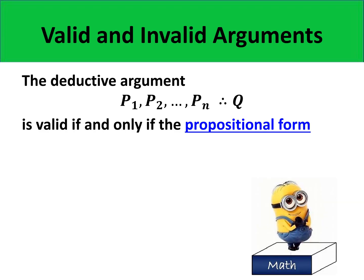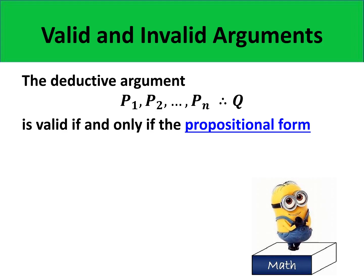In general, if we have a deductive argument with n premises P1, P2, up to Pn, followed by the conclusion, this will only be valid if and only if the propositional form P1 and P2 and up to Pn implies Q is a tautology. In other words, the conjunction of all the premises implies Q must be a tautology.